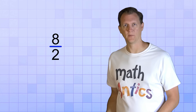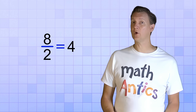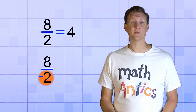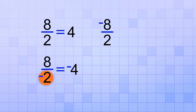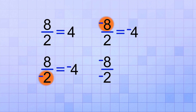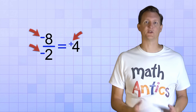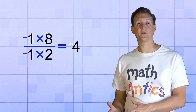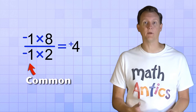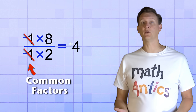For example, 8 divided by 2 is positive 4. But 8 divided by negative 2 has one negative, so the answer is negative 4. Likewise, negative 8 divided by 2 also has just one negative, so the answer is also negative 4. But negative 8 divided by negative 2 has two negatives, so the answer is positive 4. One way to see this is to factor out the negative 1 on top and the negative 1 on the bottom — you have a pair of common factors that cancel, just like simplifying a fraction.